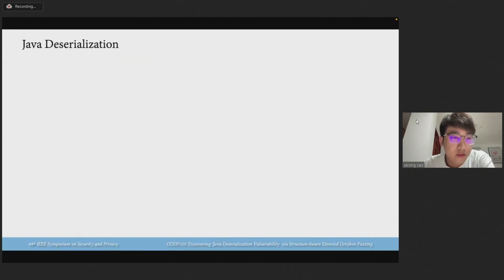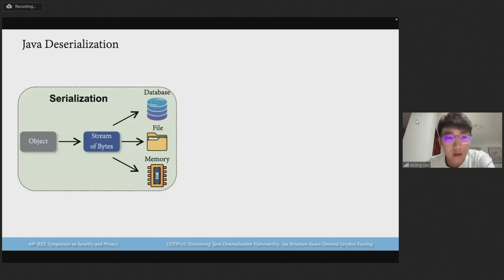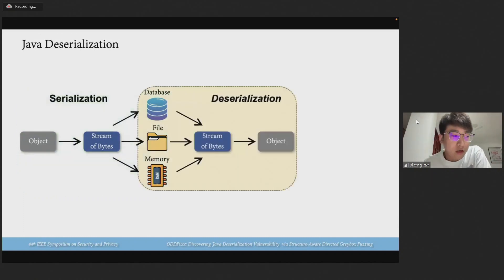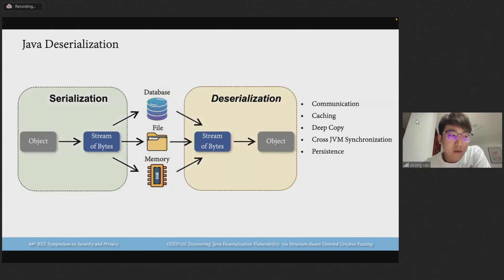First, what is Java deserialization and what is its security threat? Serialization enables an application to convert an object to a stream of bytes. The counterpart is deserialization, which reconstructs an object from a serialized byte stream. This mechanism is very useful in many scenarios, such as cross-process or cross-platform data transmission and persistent storage.